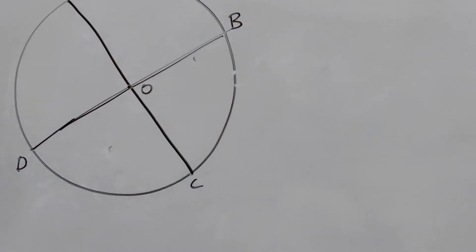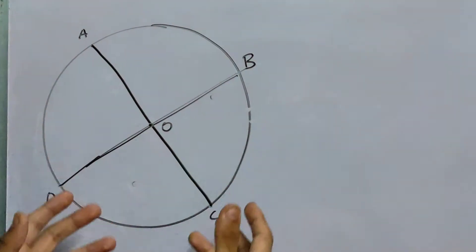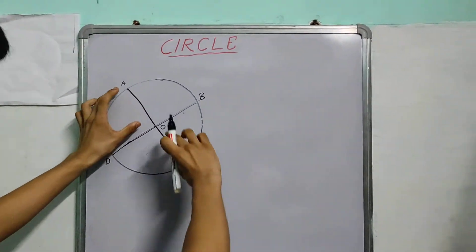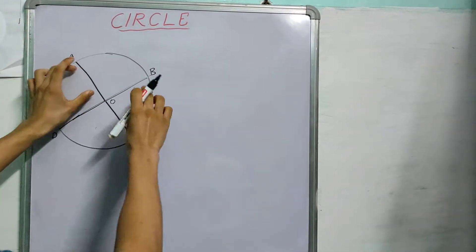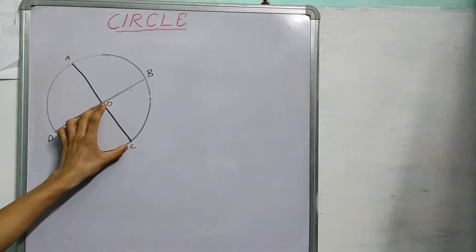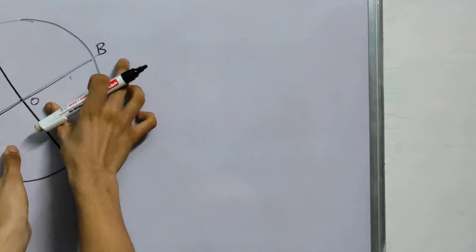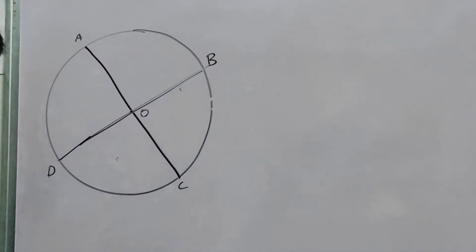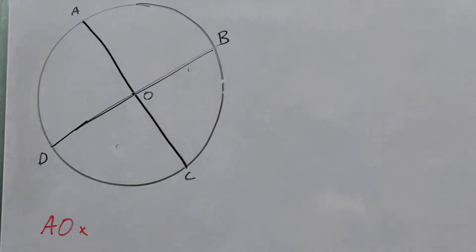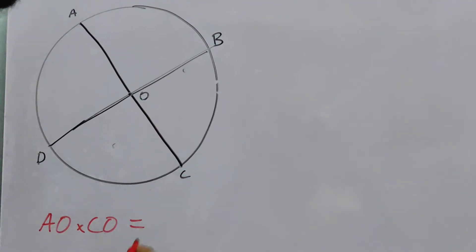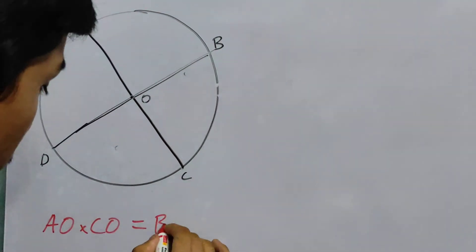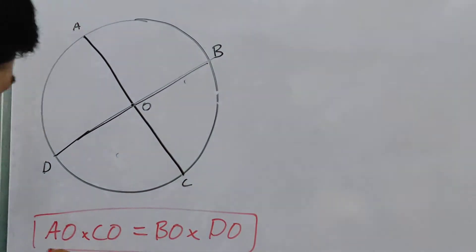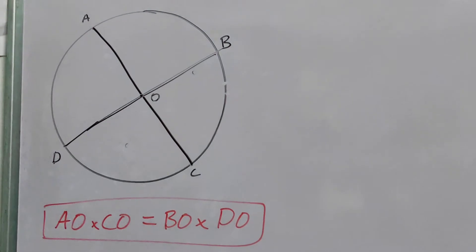Now an interesting property is that the product of these two, AO into CO will be equal to the product of these two and we are going to prove this. Let me write this down once, AO times CO is BO times DO. Now it's a very easy proof.